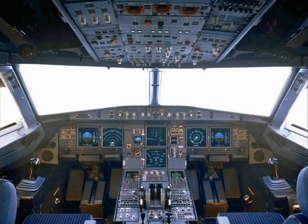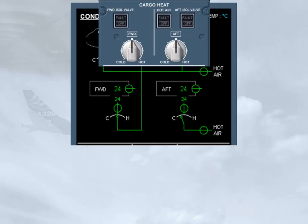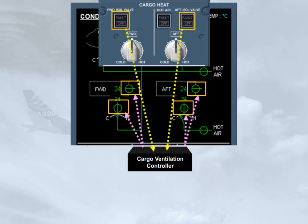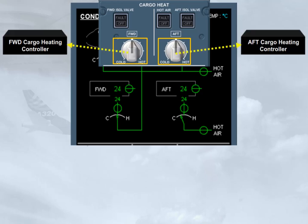On the overhead panel, there is a cargo heat panel which contains the controls related to cargo heating, if installed, and cargo ventilation. For each cargo compartment, there is an isolation valve push button switch. These push button switches normally remain in their lights-out auto position. In this case, the cargo ventilation controller will automatically open and close the isolation valves. The temperature selectors send demand signals to the related cargo heating controllers, which then move the related trim air valve to adjust the temperature of the air entering the compartment.